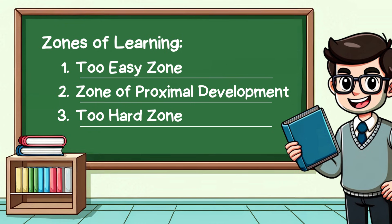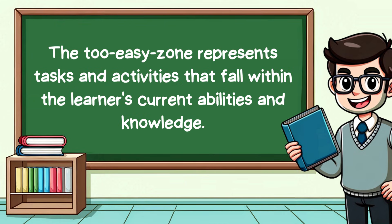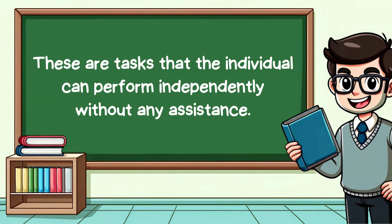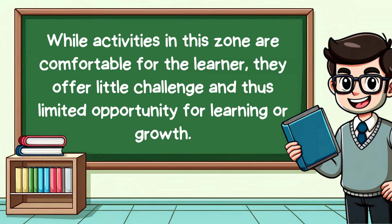First, we have the Too Easy Zone. This zone represents tasks and activities that fall within the learner's current abilities and knowledge. These are tasks that the individual can perform independently without any assistance. While activities in this zone are comfortable for the learner, they offer little challenge and thus limited opportunity for learning or growth.